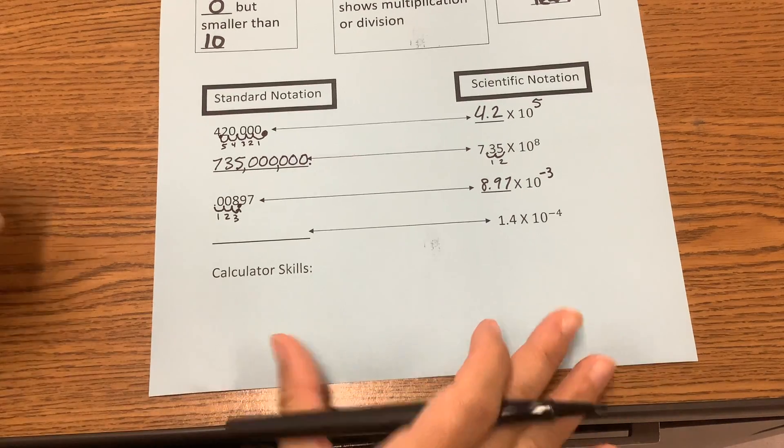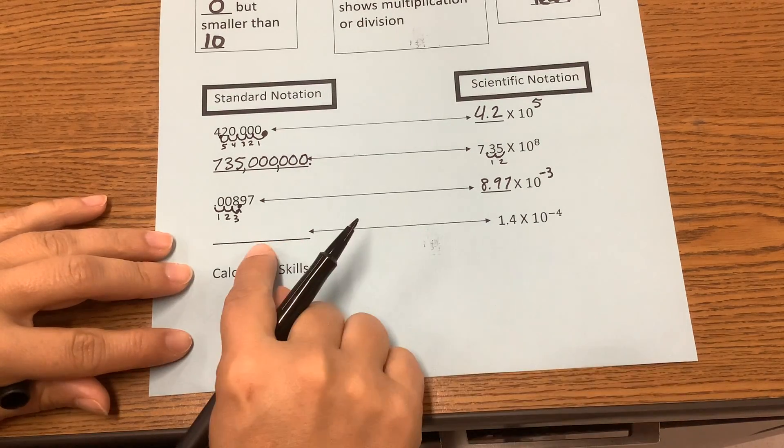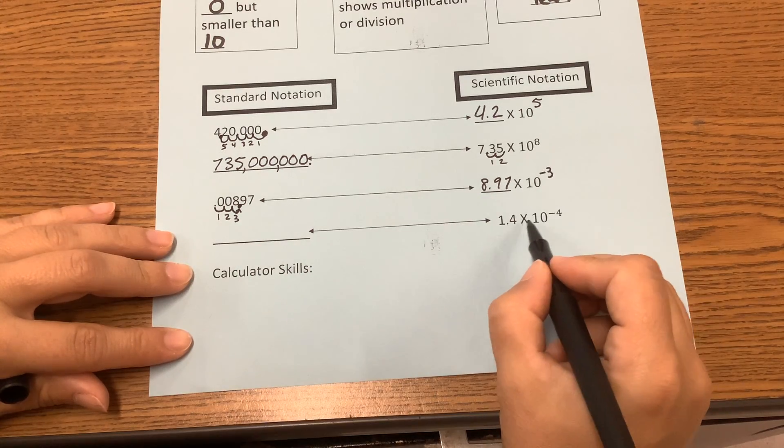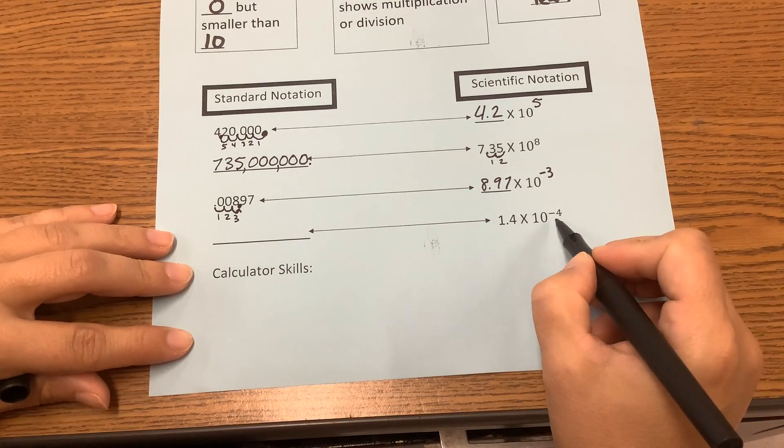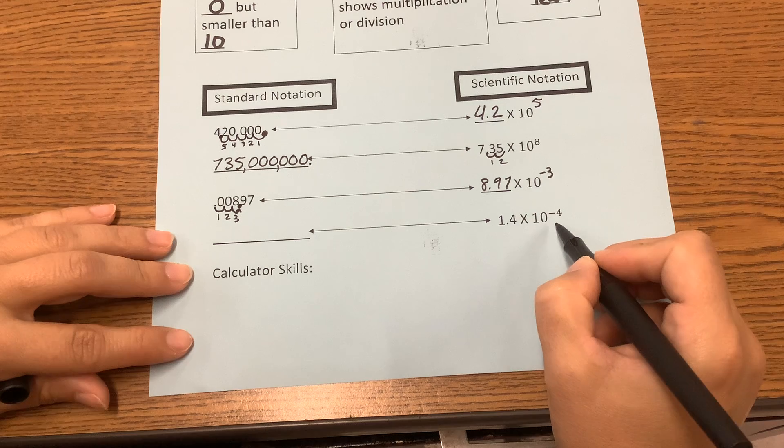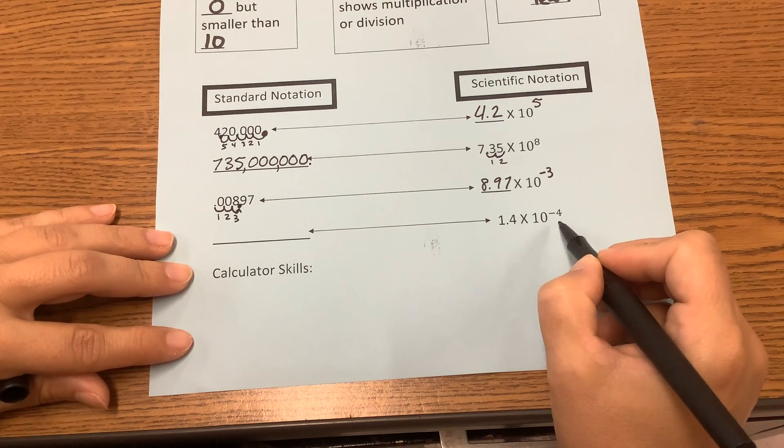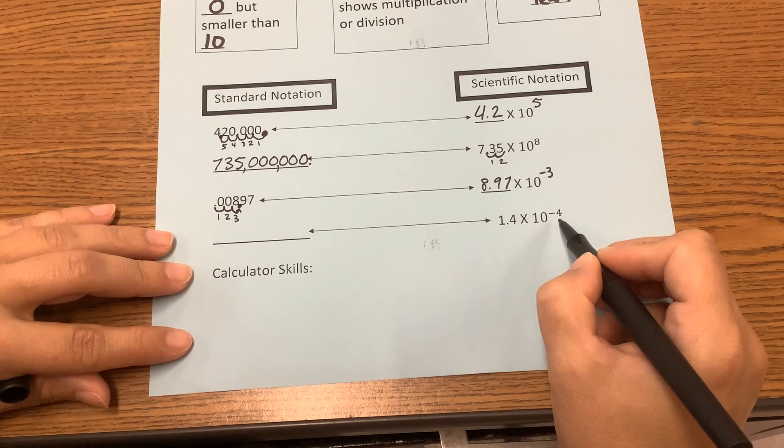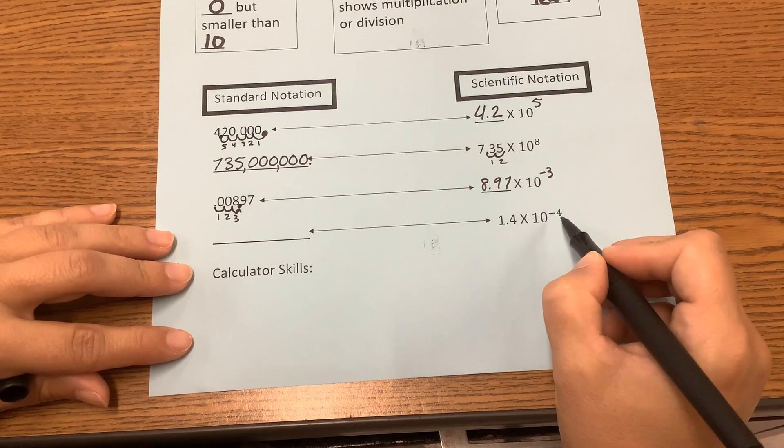Okay? Let's look at our next one. Going from scientific to standard. So we have 1.4 times 10 to the negative 4. Should this decimal be getting bigger or smaller? It should be getting much smaller. So we're going to move our decimals to the left. How many places? Four places.